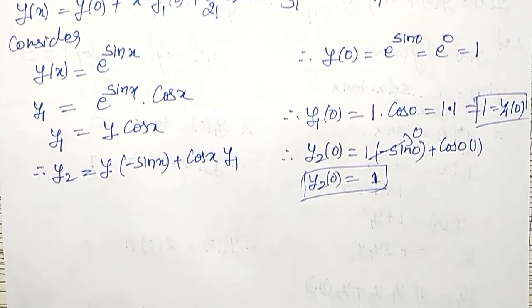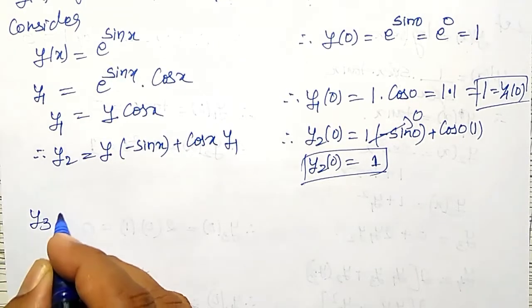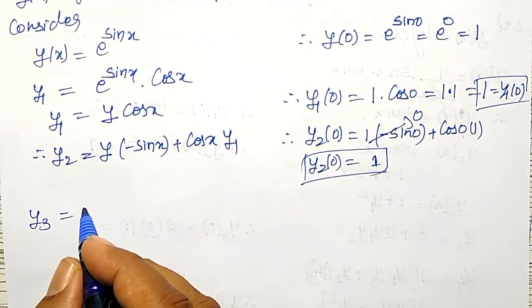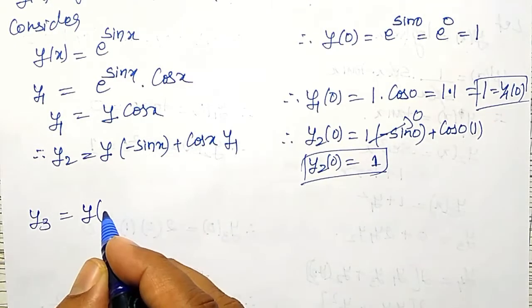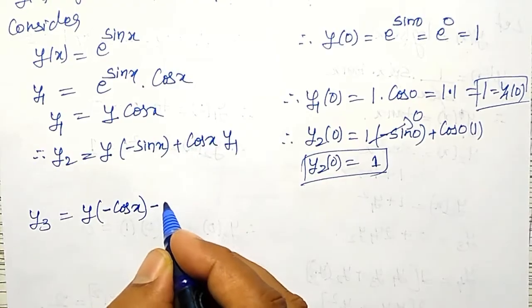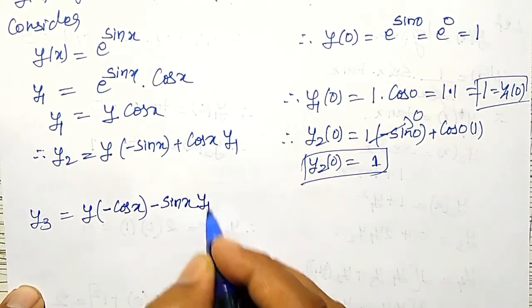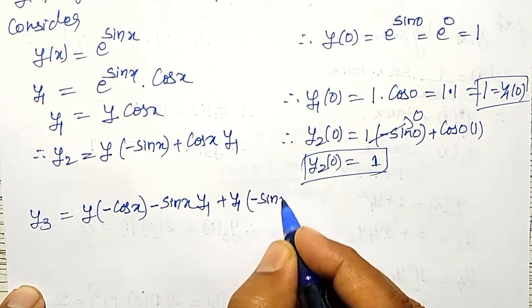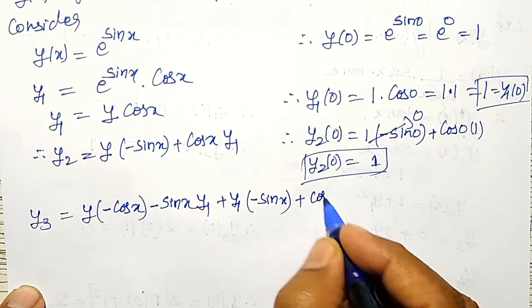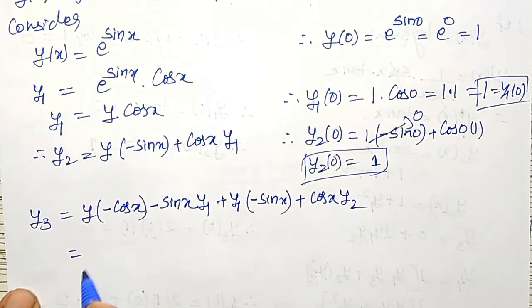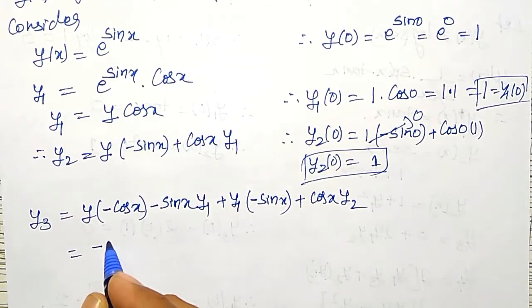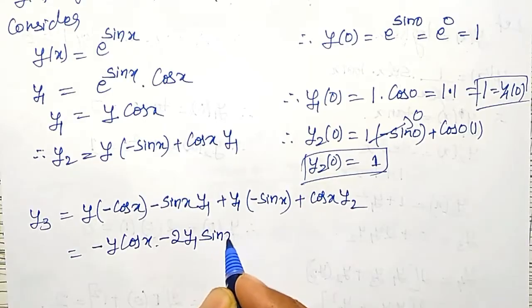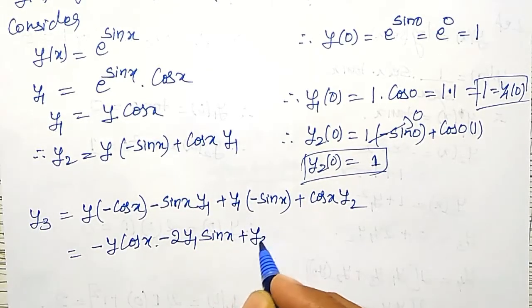Now I have to find y3 and y4. To find y3, I differentiate y2. Applying the product rule: y3 equals y into minus cos x minus sin x into y1 plus y1 into minus sin x plus cos x into y2. Simplifying, this becomes minus y into cos x minus 2 times y1 into sin x plus y2 into cos x.